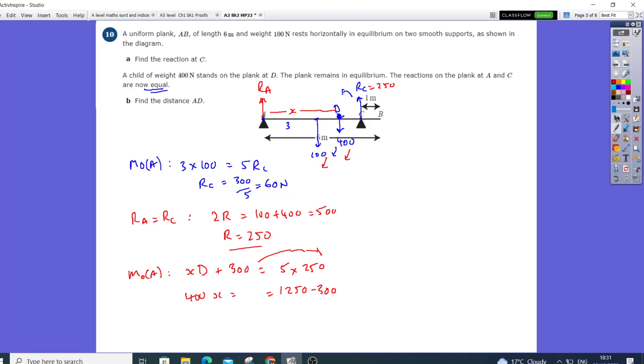Okay, so we've taken the 300 over, so that's going to give me 950, which is going to be equal to 400X.